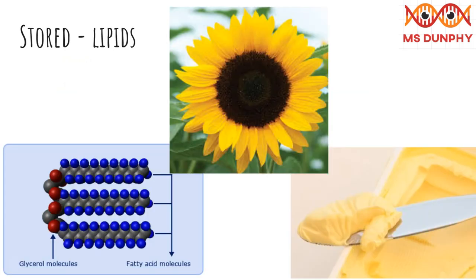Glucose can be converted into other substances for storage. Plants can convert some of the glucose they produce into lipids — fats and oils. Plants store lipids in seeds. Sunflower seeds contain a lot of oil; we get cooking oil and margarine from them.